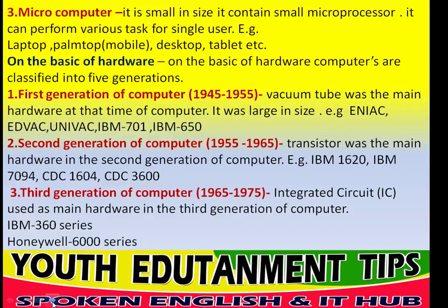Now we will talk about third generation of computer. The period of third generation of computer is 1965 to 1975. The integrated circuit, also called IC, was used as the main hardware. Examples of third generation computers are IBM 360 and Honeywell 6000 series.